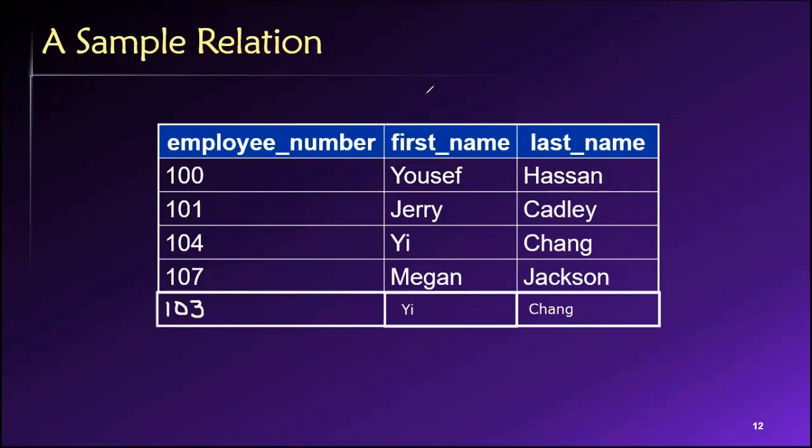And this is perfectly acceptable. This is fine because there is something now about this row that differentiates it from this row. They are not exact duplicates of each other anymore.